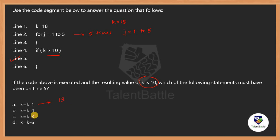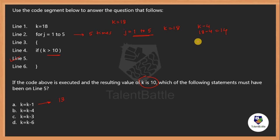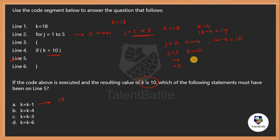For option B, k equals k-4. Initially k is 18; condition is true so k becomes 18 minus 4 equals 14. In the second iteration k is 14, so new k is 14 minus 4 equals 10. Then j equals 3 and k is 10 — condition is false because 10 is not greater than 10. For j equals 4 and j equals 5 the value of k remains 10, which is the expected result.